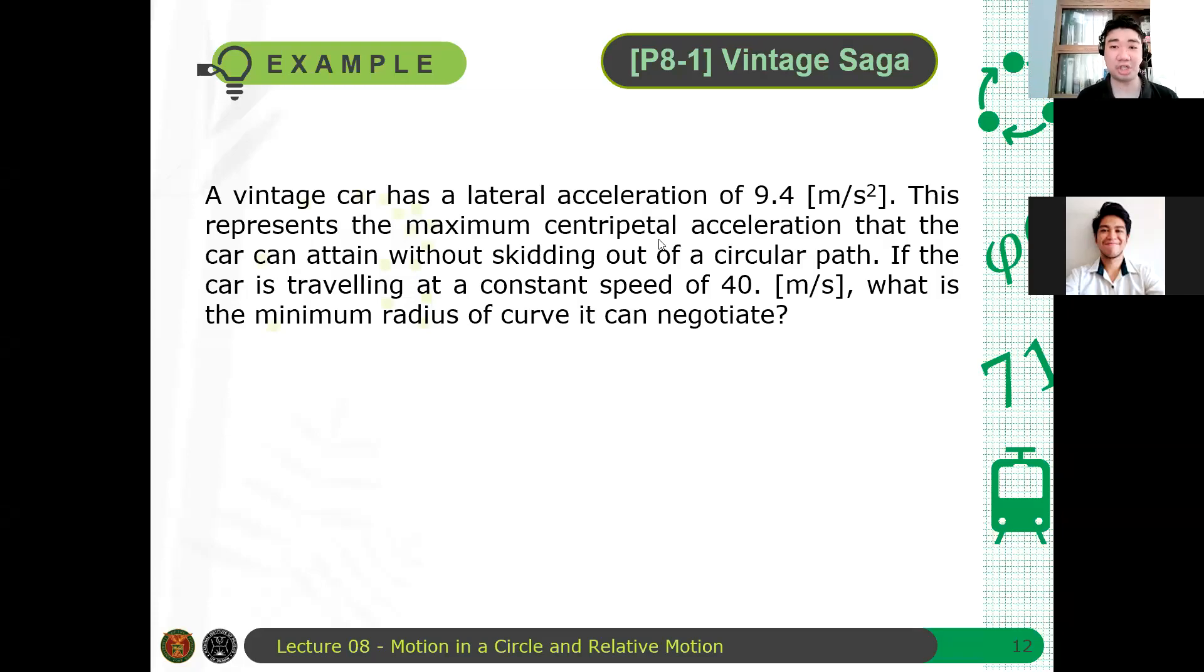So let's have an example, a vintage car. The title of the problem is Vintage Saga. A vintage car has a lateral acceleration of 9.4 meters per second squared. This represents the maximum centripetal acceleration that the car can attain without skidding out of a circular path. If the car is traveling at a constant speed of 40 meters per second, what is the minimum radius of curve it can negotiate?